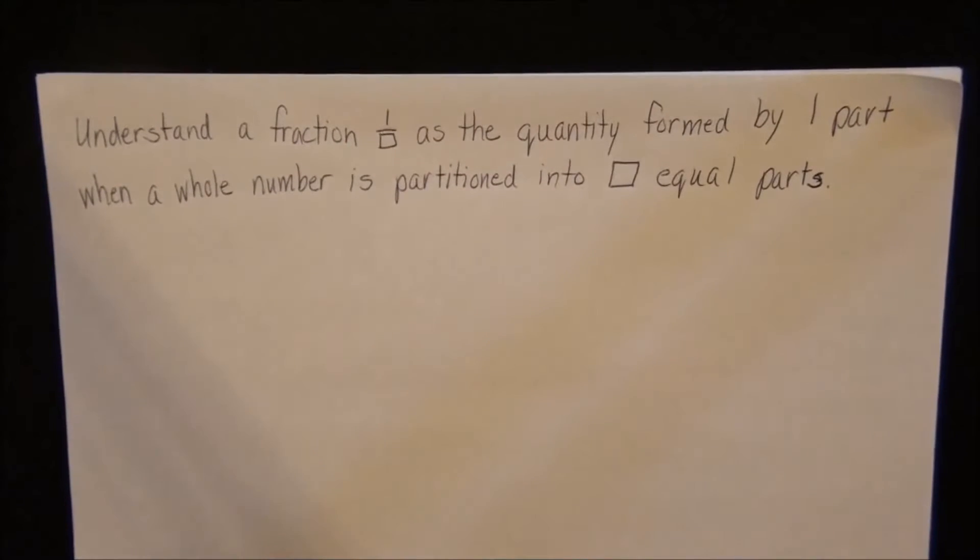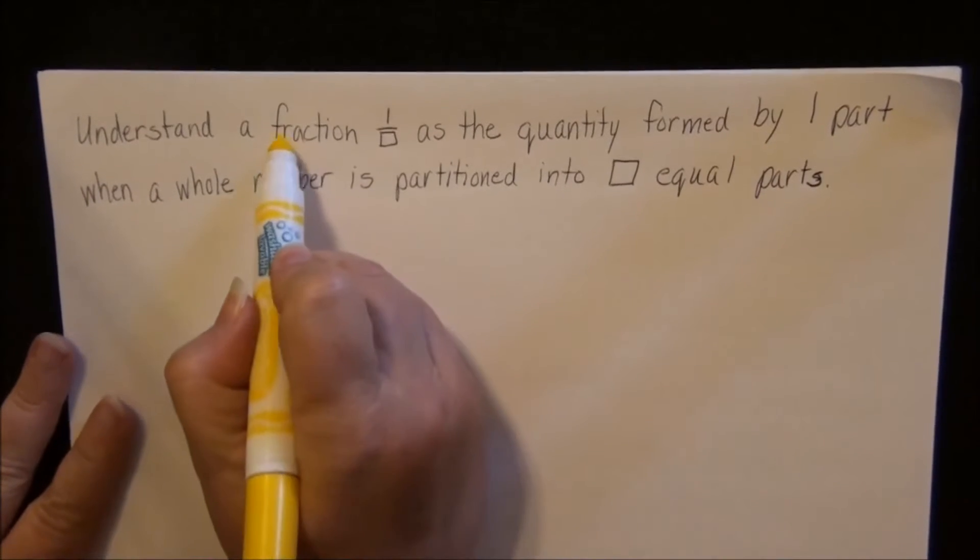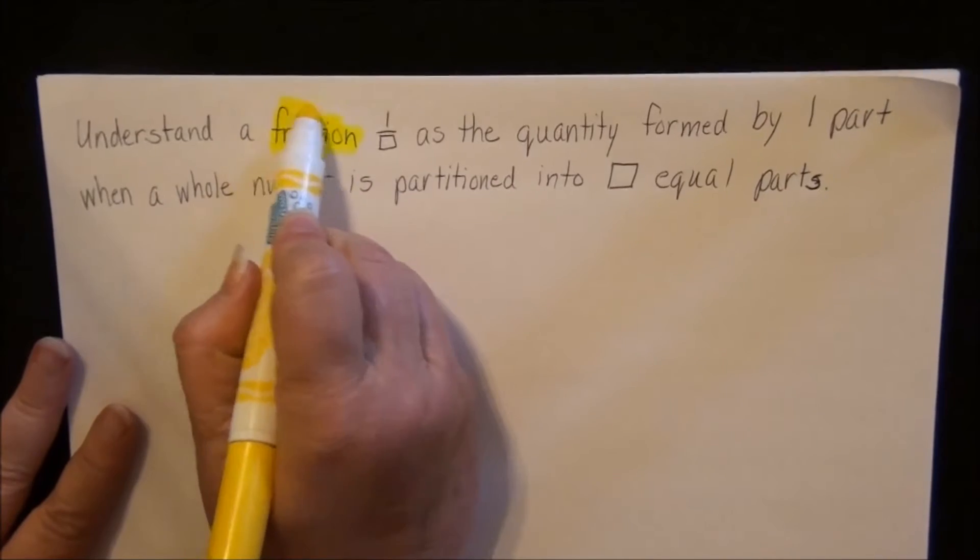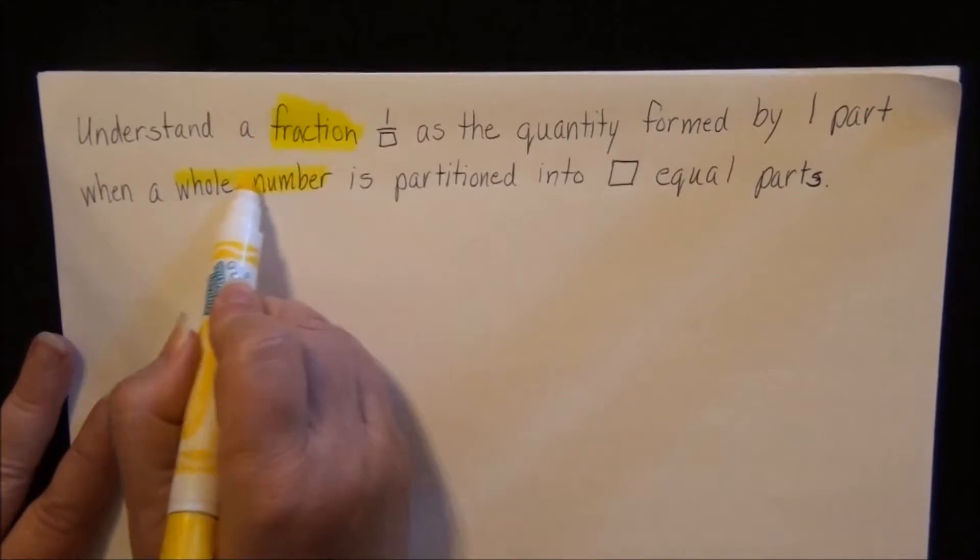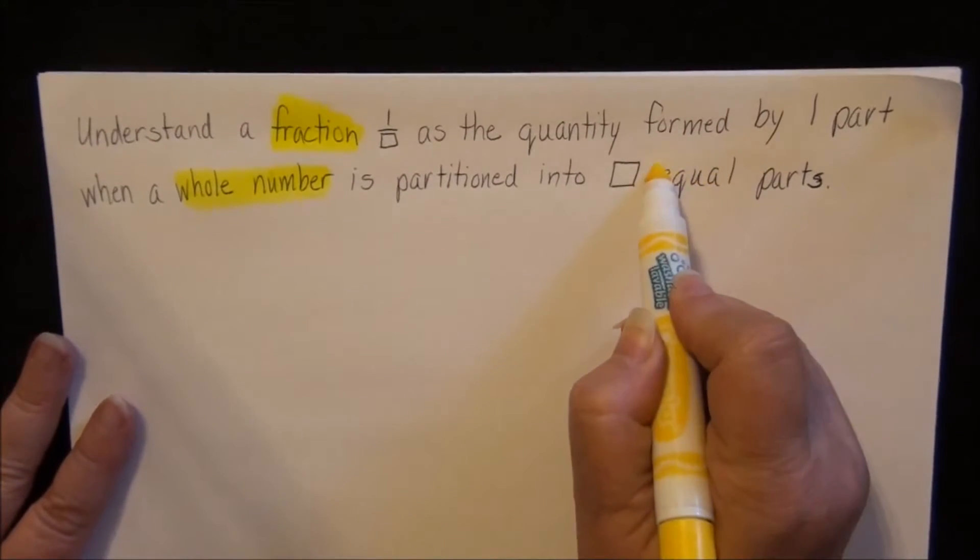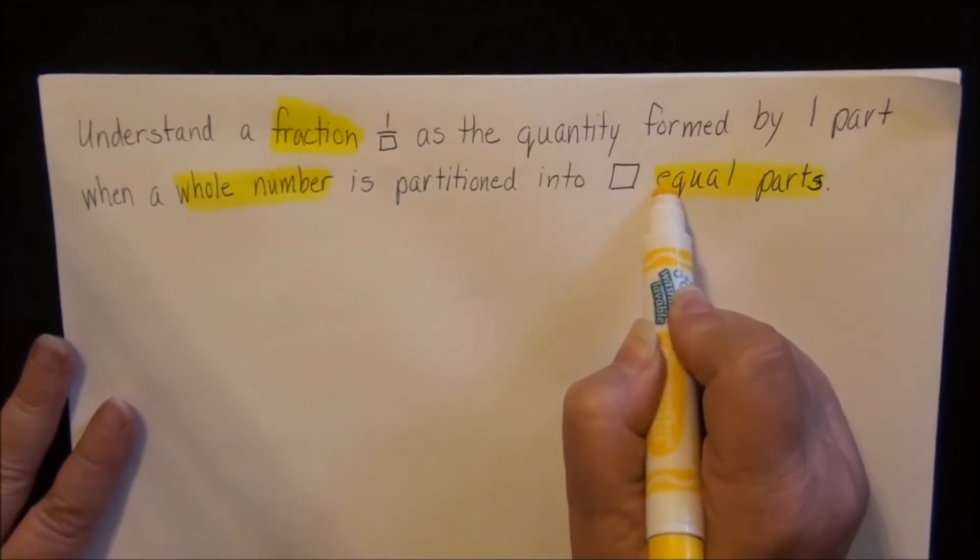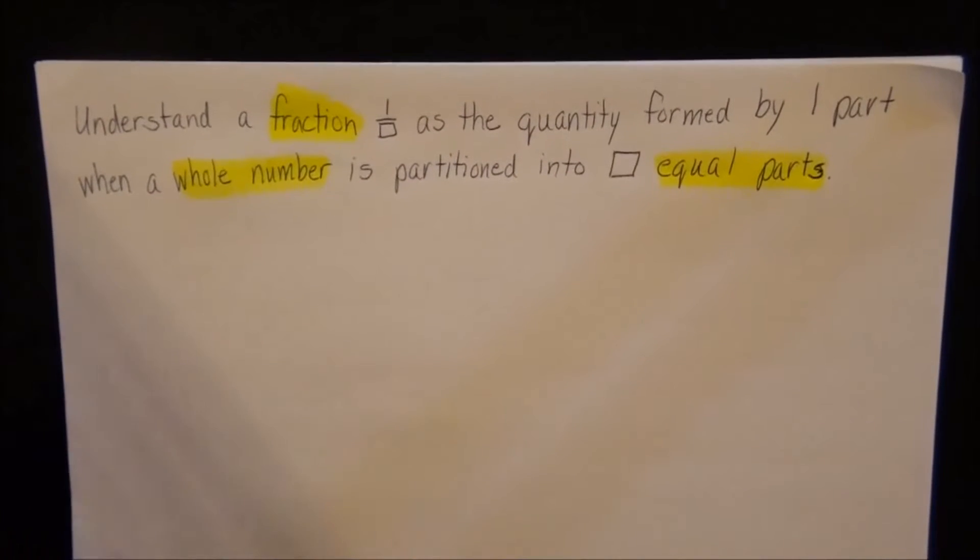First of all, let's go through those words. There's some words that we know already, but these are math vocabulary words, so I just want to highlight them for you. This one is fraction, this one is whole number, and here is equal parts. As I talk about these words through the lesson, I will point them out to you so that it will remind you what those words mean.